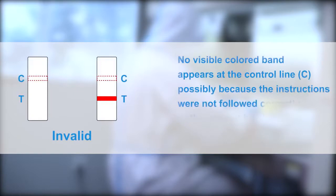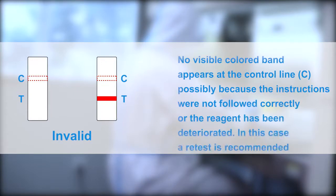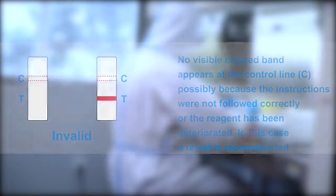Invalid result: No visible colored band appears at the control line, possibly because the instructions were not followed correctly or the reagent has been deteriorated. In this case, a retest is recommended.